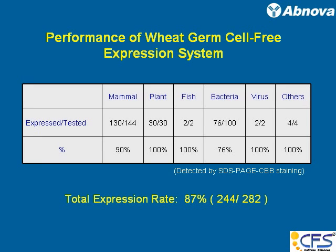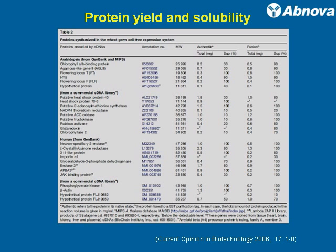This is the WeJAM cell-free expression system data, choosing different types of proteins — mammal, plant, fish, bacteria, virus, and others. This shows the number of proteins expressed versus tested samples. As you can see, most of them are expressed close to 100%, at least among the proteins selected for this experiment — the expression rate was very, very high. This excerpt is from a paper in Current Opinion in Biotechnology, 2006.